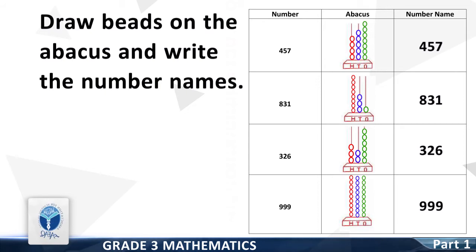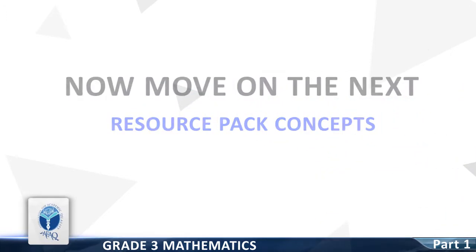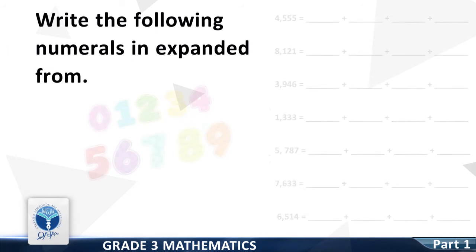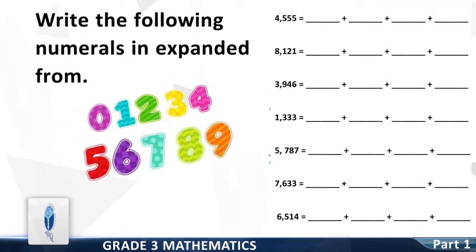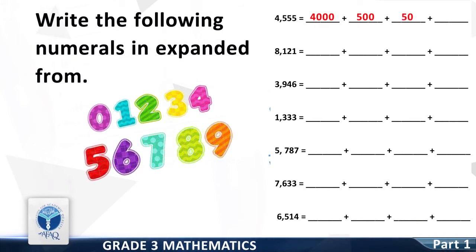Now we move to the next resource pack concept: Write the following numerals in expanded form. Let's start from the first number, 4,555. The first expanded form: 4,000. Next: 500. Next: 50.